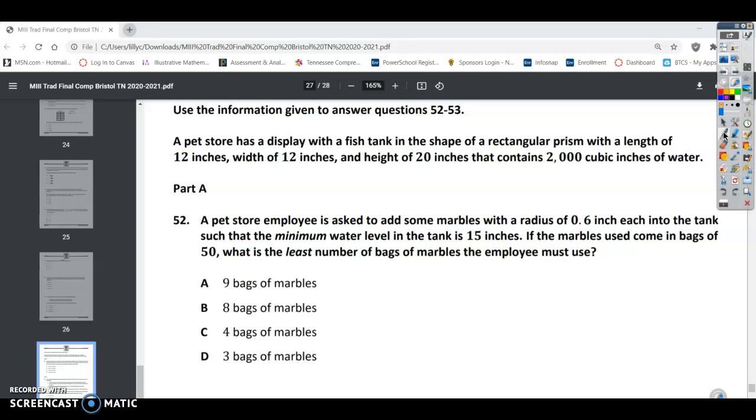Use the information given to answer questions 52 and 53. A pet store has a display with a fish tank in the shape of a rectangular prism with a length of 12 inches, width of 12 inches, and height of 20 inches that contains 2,000 cubic inches of water. A pet store employee is asked to add some marbles with a radius of 0.6 inches each into the tank such that the minimum water level in the tank is 15 inches. If the marbles used come in bags of 50, what is the least number of bags of marbles the employee must use?